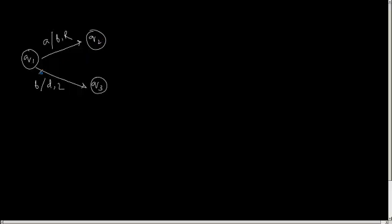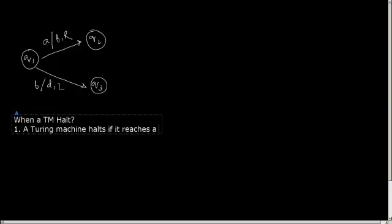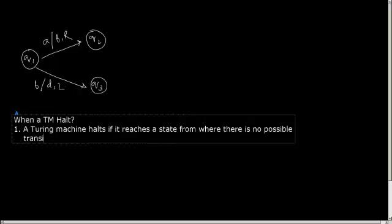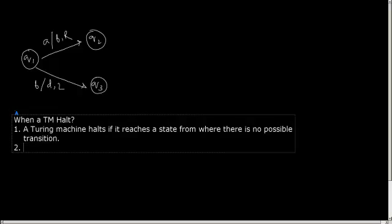Now let us see the concept of halting. When a Turing machine halts? A Turing machine halts if it reaches a state from where no possible transitions can occur, no further transitions can occur. So it is a state from where no possible transition.